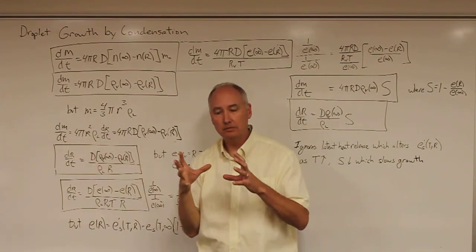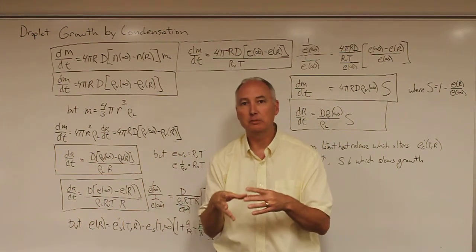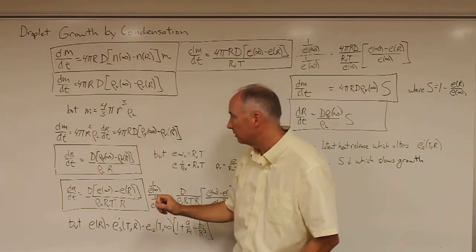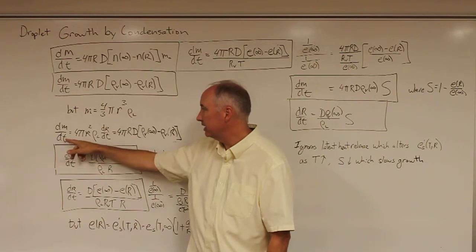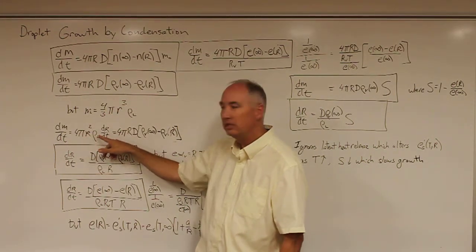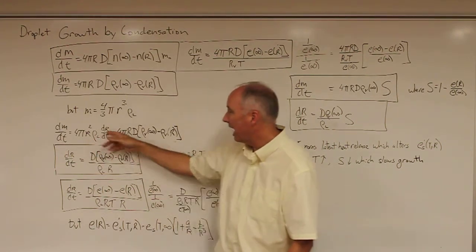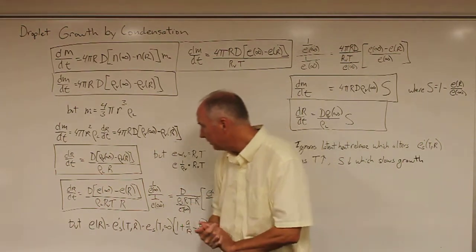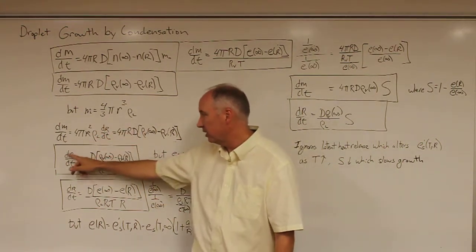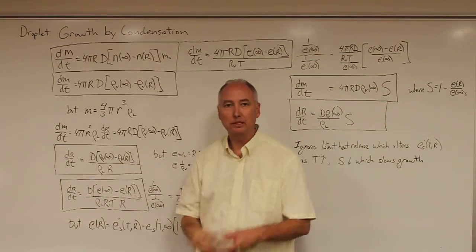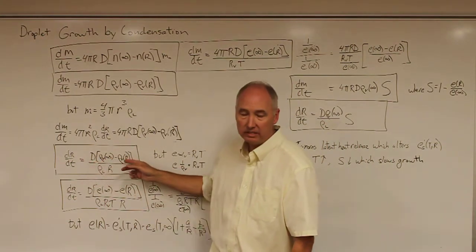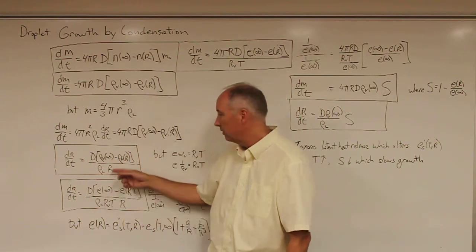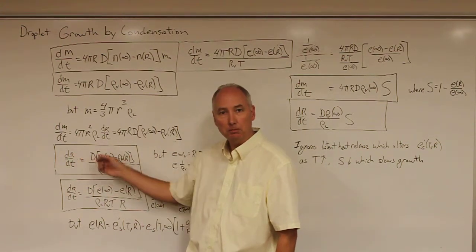We can make use of the fact that our droplets are spherical, which is a very good assumption for cloud droplets. For a spherical droplet, the mass equals (4/3)πr³ times the density of liquid water. Taking the derivative dm/dt gives 4πr² times the density of liquid water times dr/dt. Setting that equal to the earlier equation and solving for dr/dt, the growth rate in terms of radius equals the diffusivity times the difference in water vapor density (far from the droplet minus at the surface) divided by the density of liquid water, divided by r. So the growth rate dr/dt is proportional to 1/r.